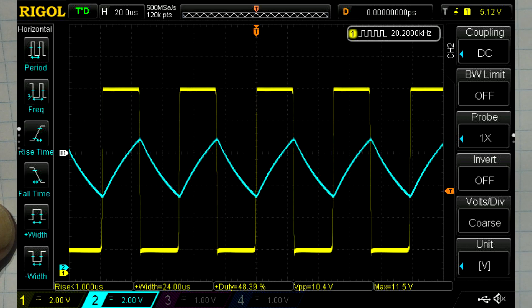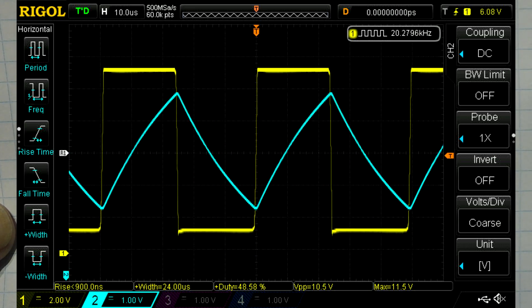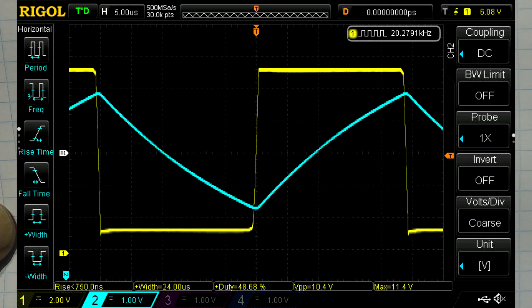So with the scope, looking at the output and looking at the capacitor, we can see the relationship between the charging up to two-thirds VCC, and then discharging down to one-third VCC, which gives us our oscillation.